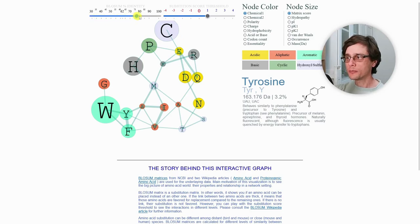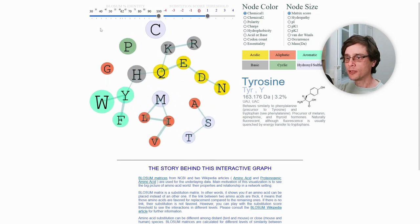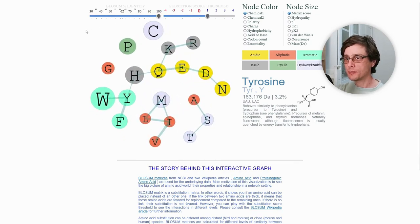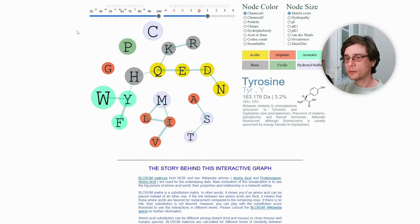When switching to higher BLOSUM matrices, up to BLOSUM100, edges get removed, meaning that fewer mismatches are accepted. We may use such matrices when we want to make the alignment more restrictive, for example, when we want to find very closely related proteins.